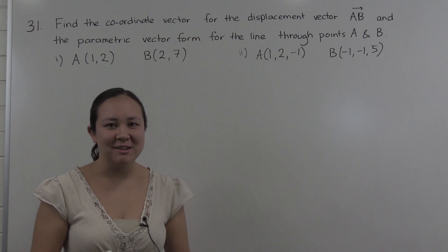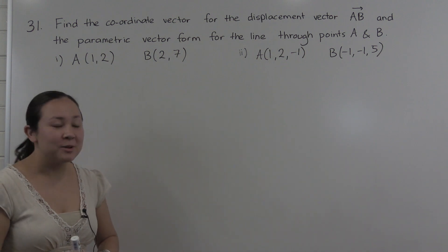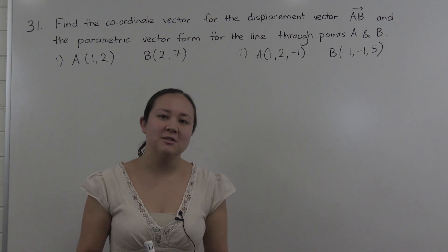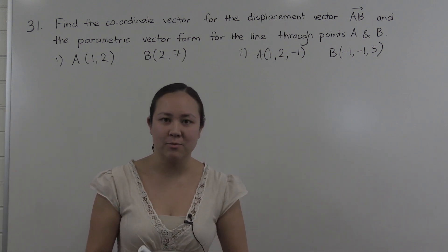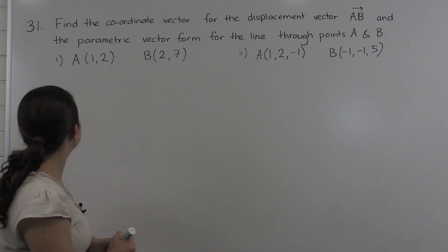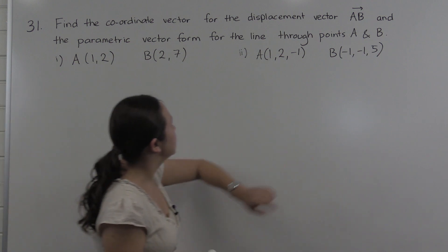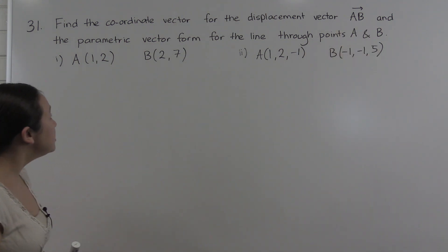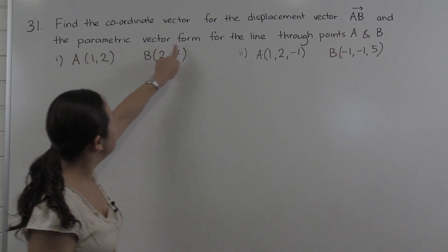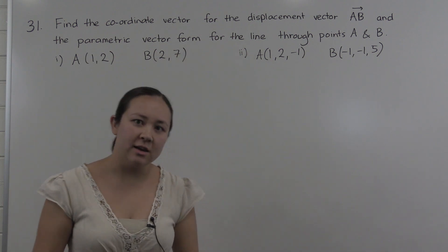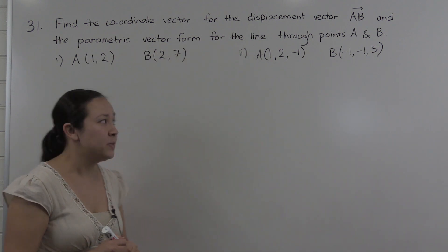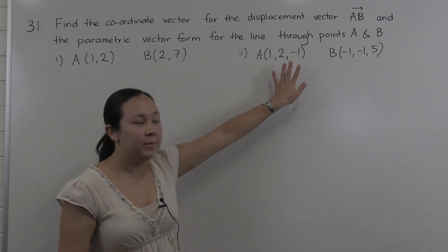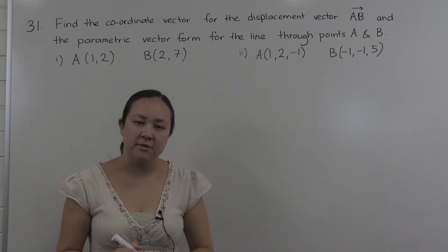My name is Tanam Shaw and we're at UNSW. Today I'm going to work through question 31 on the algebra section of the Math 1131 problem set. This question is asking us to find the coordinate vector for the displacement vector AB, and also to give the parametric vector form for the line that goes through the points A and B. Part 1 is in two dimensions and part 2 is in three dimensions.